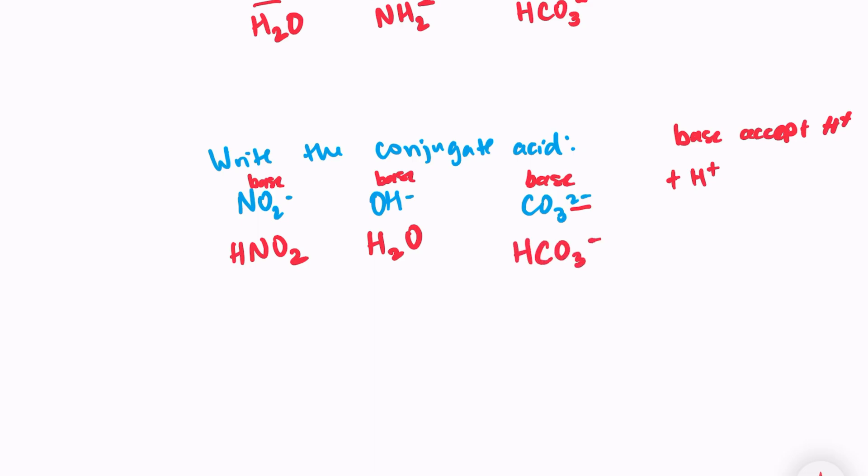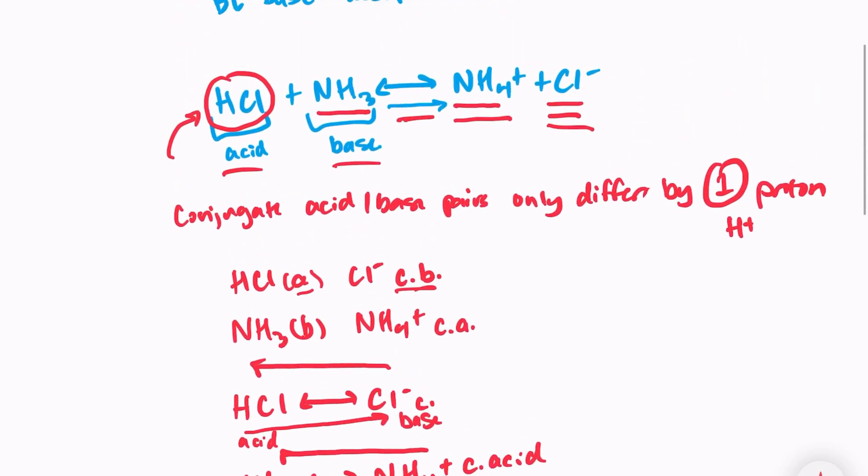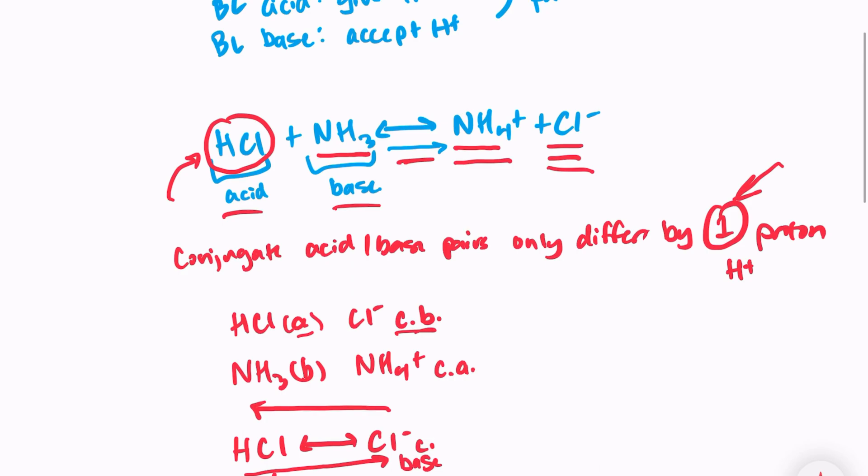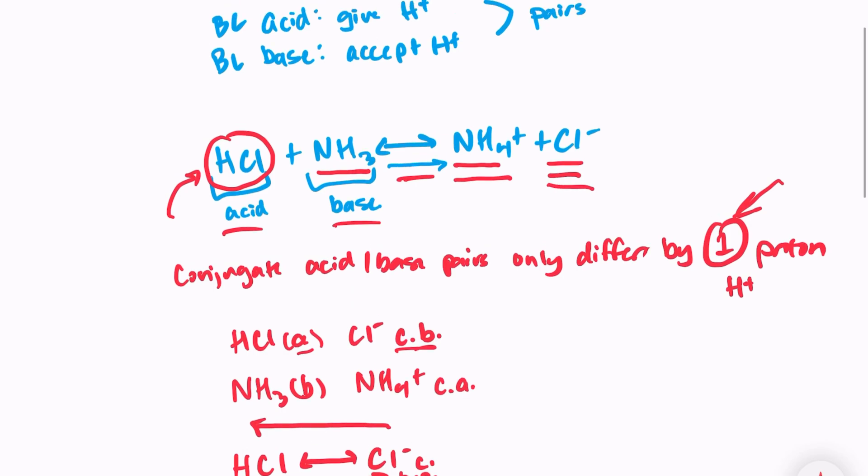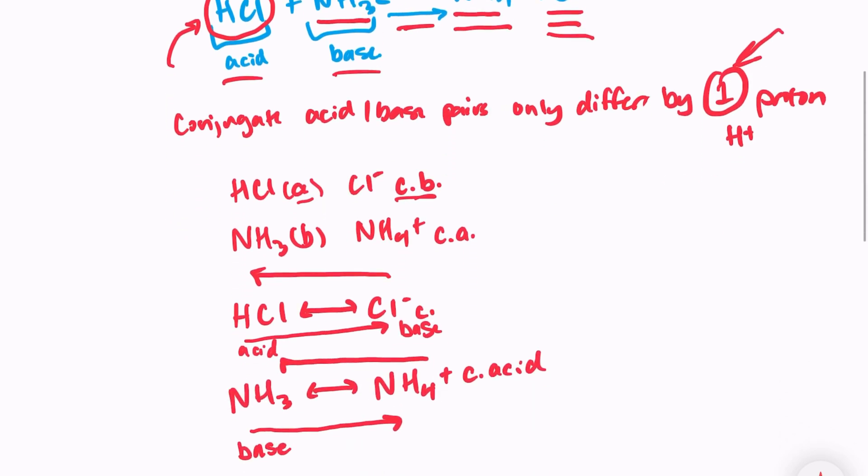So the main things to remember is that conjugate acid-base pairs only differ by one proton. That's the really important part. And that will help you solve really any equation to find your acid and base pairs. So you're just looking for the two species that are different by one proton. And if it helps you, you can break it into smaller equations like we did here.